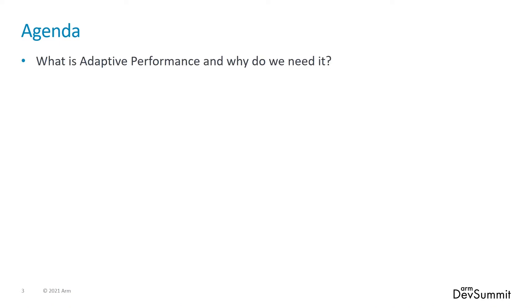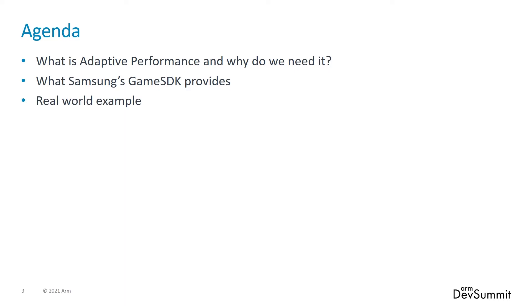This talk has two parts. Firstly, I will give a description of what adaptive performance is and why it is needed. Next, I'll talk about how the OS can help with this, and in particular the API Samsung has added to our devices' Game SDK. I'll also give a real-world example of where Samsung has worked with a game developer to incorporate adaptive performance. Then I'll hand over to David to talk about adaptive performance in detail.